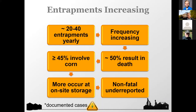Of the cases we do see, generally about 50 percent result in death — sometimes a bit more, like 60 percent in 2019, sometimes a bit less at 40 or 30 percent. The vast majority involve corn, which is why we focus on it. But we do see entrapments in soybean, wheat, rice, cotton seed, and canola seed — they can happen in almost any type of grain. The majority occur at storage sites.